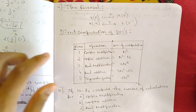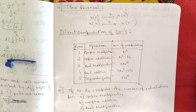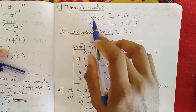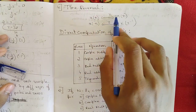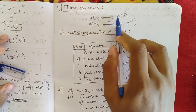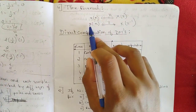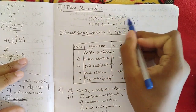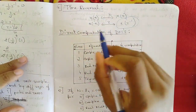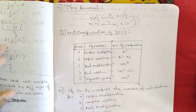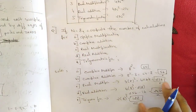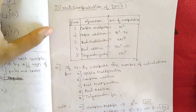The next important property is time reversal. It is very straightforward: if a sequence x[n] has Z-transform X(z), then x[-n] — the time-reversed sequence — has Z-transform X(z⁻¹).